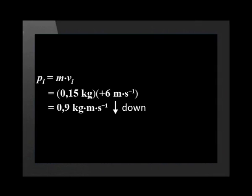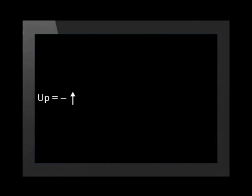As a vector diagram, it would be an arrow pointing down. When the tennis ball bounces back, it changes direction. The final velocity has a negative value.